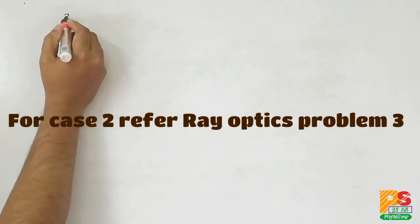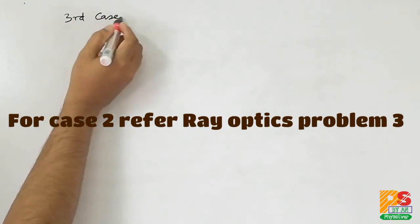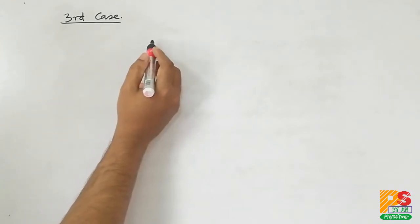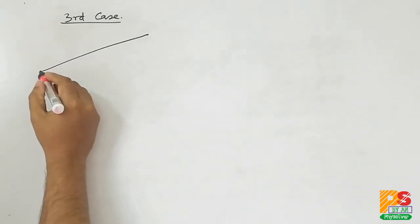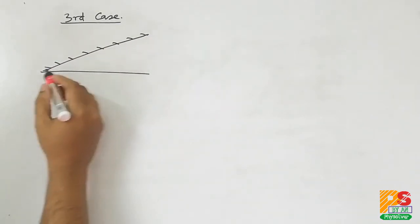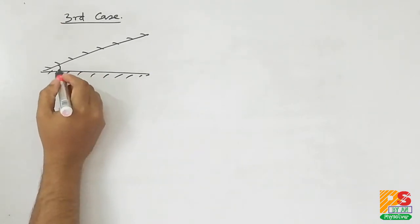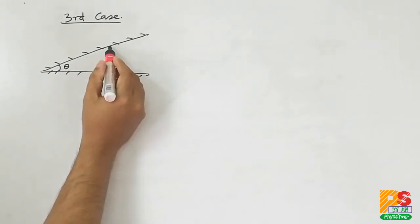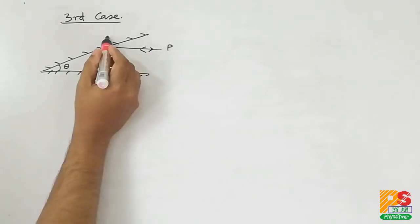Hello students. Here it is given two plane mirrors are inclined at an angle theta. The incident ray is parallel to one mirror and the ray retraces back in its own path.